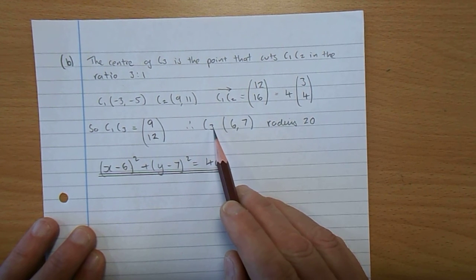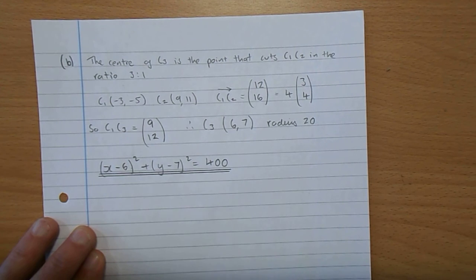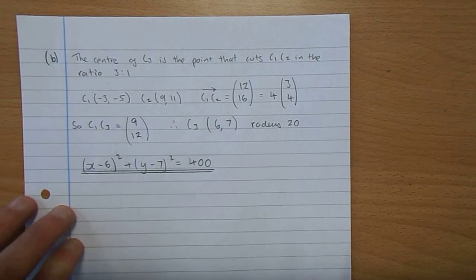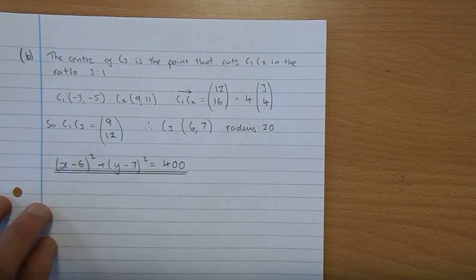And if you start off at minus 5 and you need to go along 12 to get to the midpoint of circle C3, you're going to end up at 7. So the centre of C3 is 6, 7. And as we said earlier on, it's got a radius of 20.